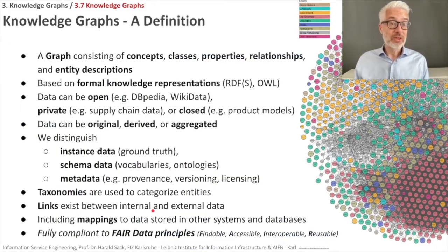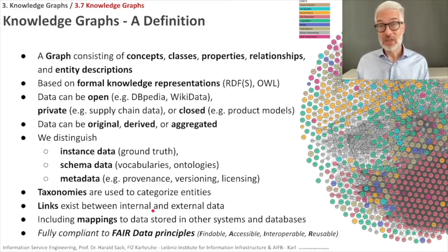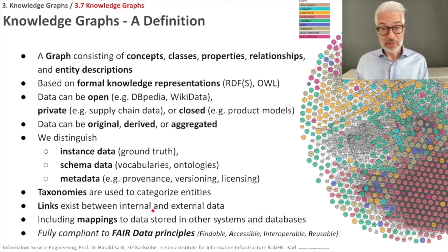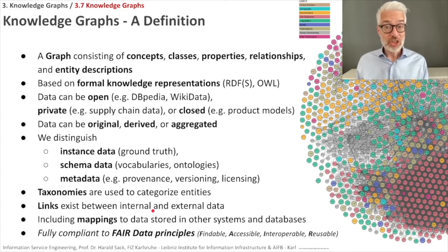I want to define now what is a knowledge graph. A knowledge graph, first of all, is a graph. It consists of many things — not only classes and instances as in the semantic web, but also abstract concepts. So it is a graph consisting of concepts, classes, properties of these classes, relationships between these classes, and entity descriptions. A knowledge graph earns the term 'knowledge graph' simply because it is based on a formal knowledge representation, like semantic web technology, RDFS, and OWL.